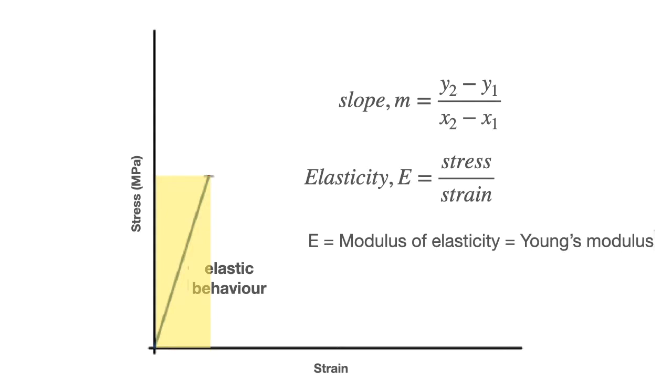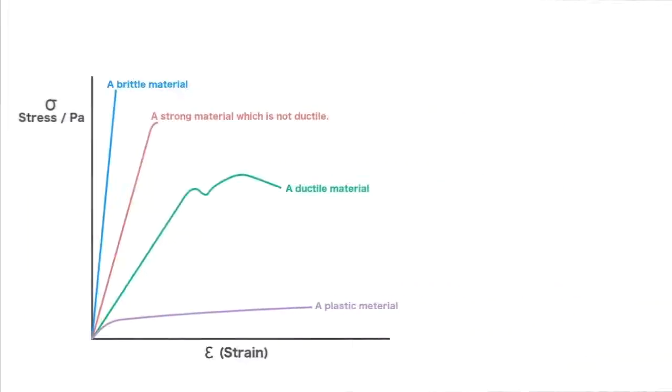Sometimes we call it Young's modulus. Simple, right? But please remember, this relationship of elasticity is only valid within the elastic region. Once it goes to the strain hardening region, you can't use this equation anymore because the line is not straight. Now here's an example of the stress-strain diagram of different types of materials. You can see that the pattern is quite different.